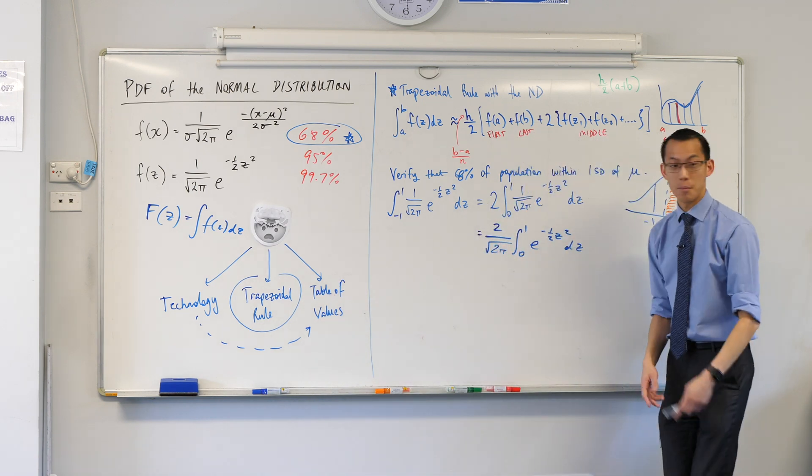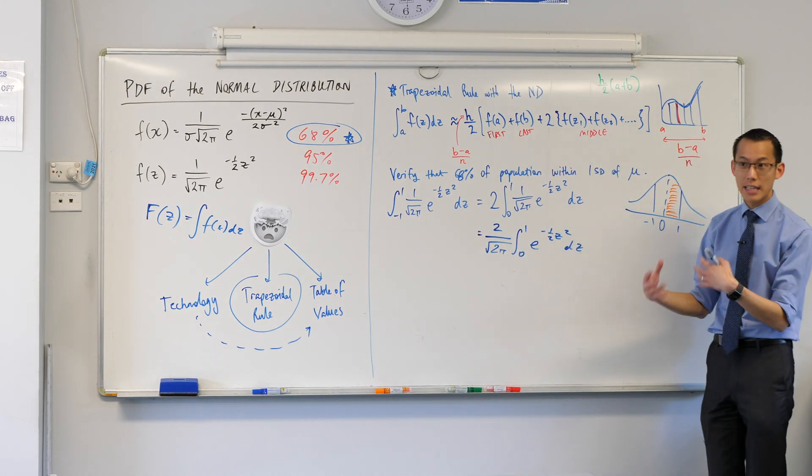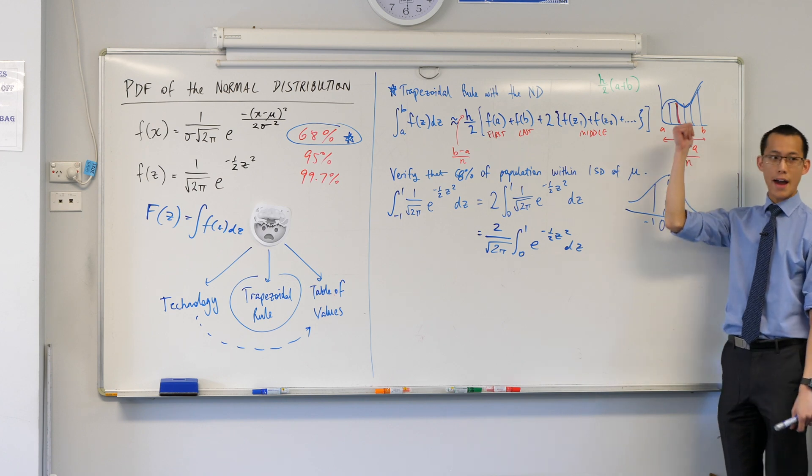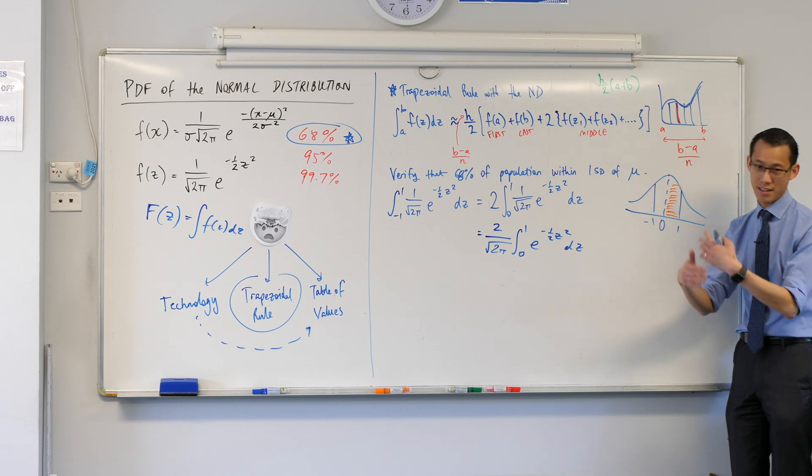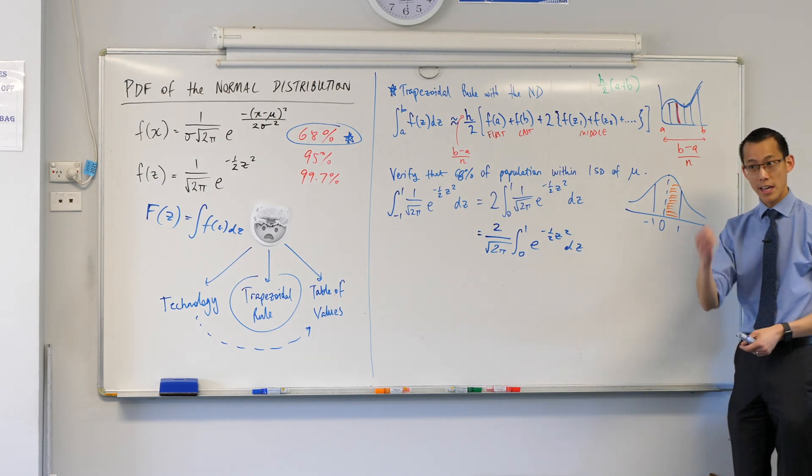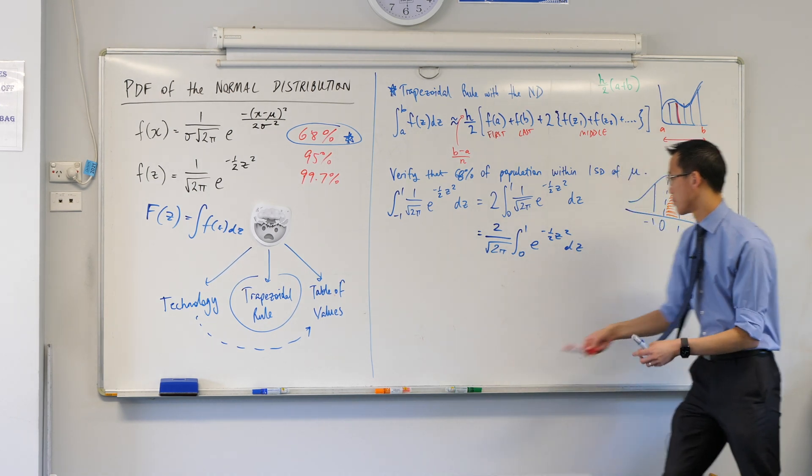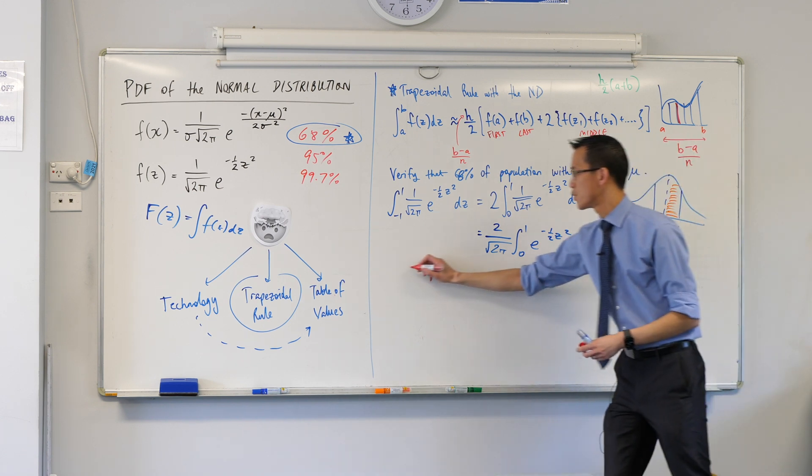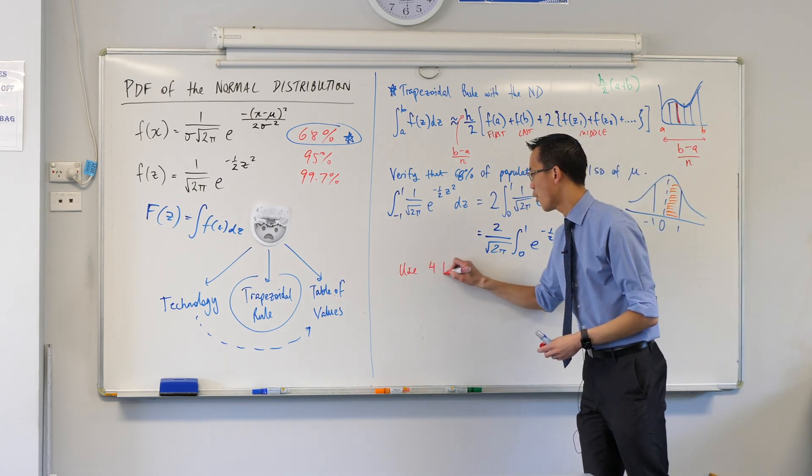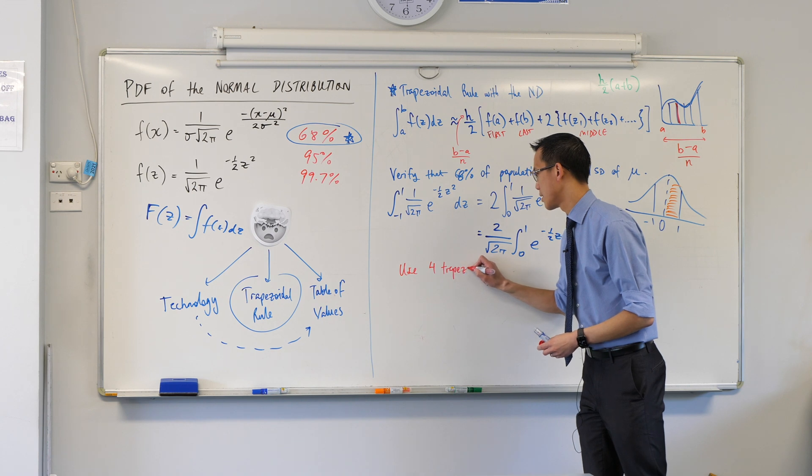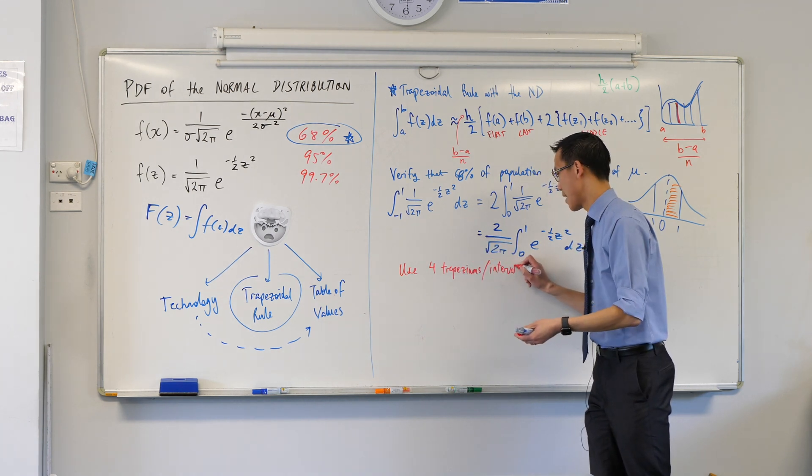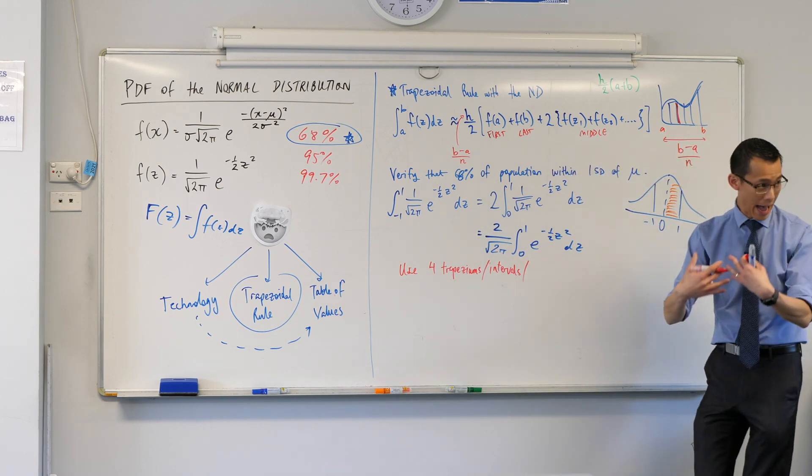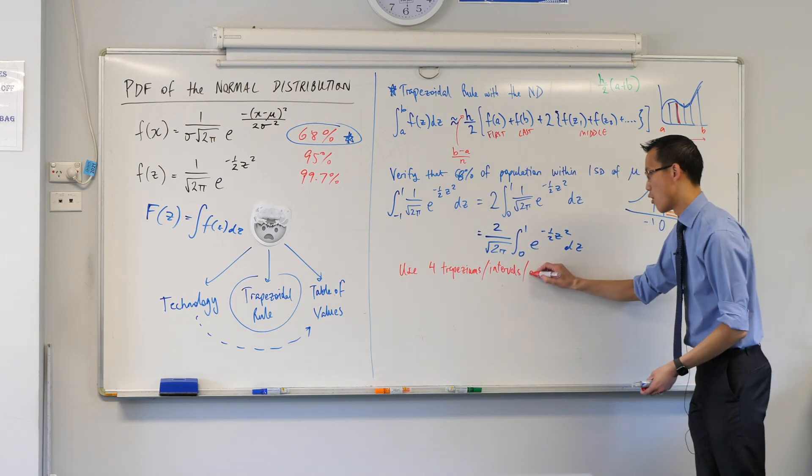Okay, one last step. The trapezoidal rule, right? I need some level of accuracy. I'm going to suggest that what we pick is we go with four trapeziums. So if I suggest that we use four trapeziums, you might also hear this as four intervals, or you might also hear it as four applications of the trapezoidal rule. They all mean the same thing.